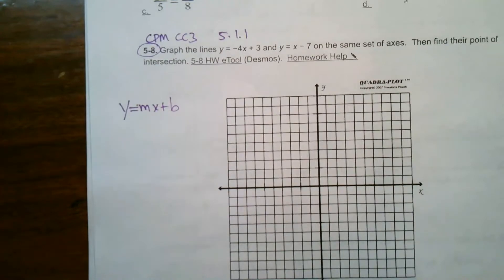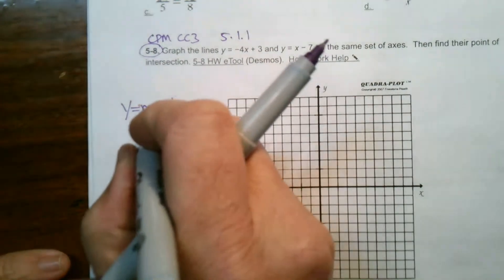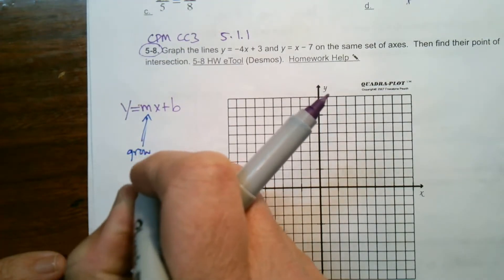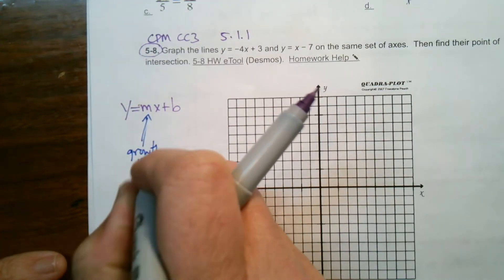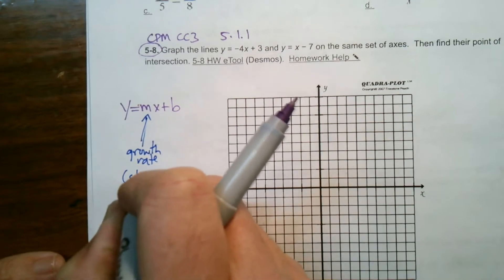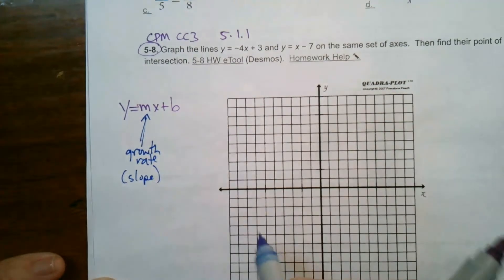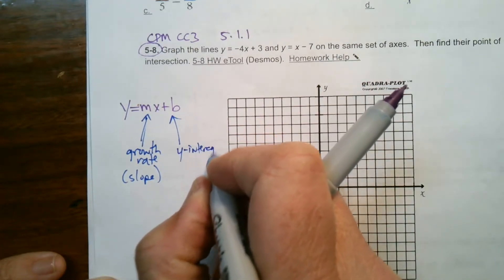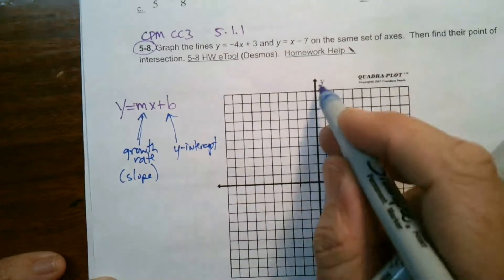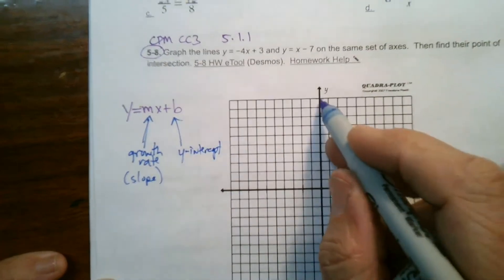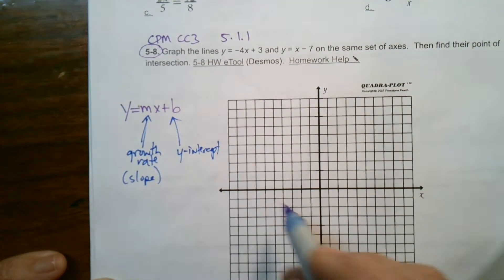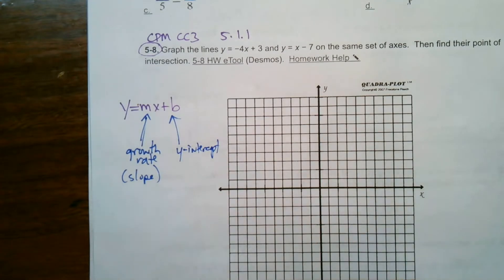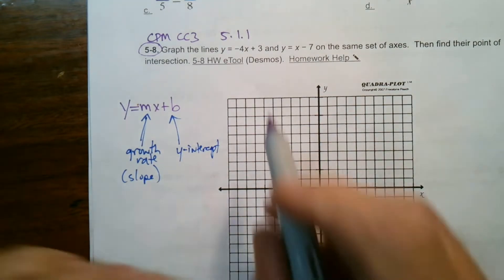What does it tell me? m, remember, is the growth rate. It's the growth rate or also known as the slope of the line. And b is the y-intercept. That tells me where the line crosses the y-axis. That's the y-intercept, or my initial value, sometimes known as.